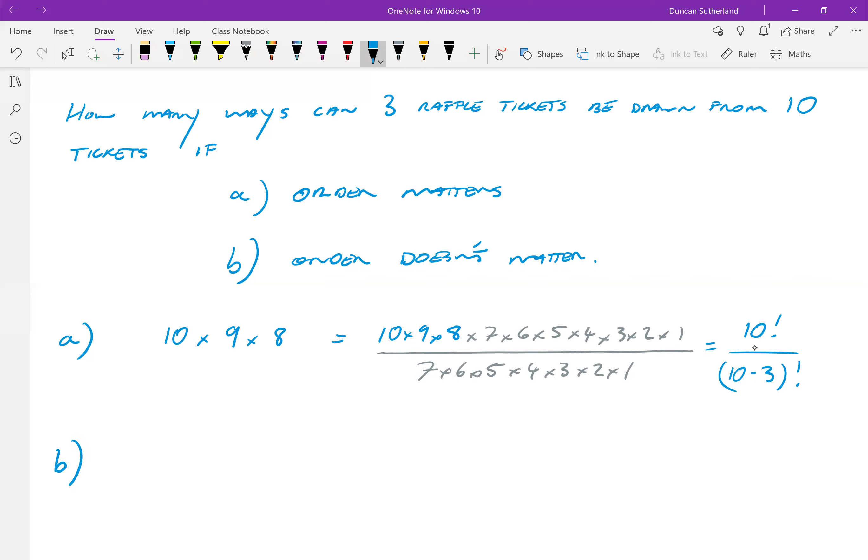So suppose that order doesn't matter. We don't care which order these three come out in. That means that there's a number of different ways that we can arrange this.